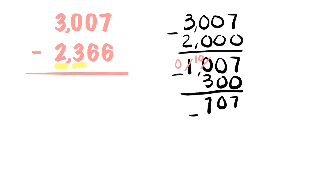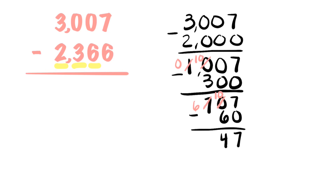So now we're only going to subtract our tens, which is a 6, which makes 60. 7 take away 0 is 7. 0 take away 6 is impossible. We have to go next door and borrow one of the hundreds. So now we only have 600, and we can give those over to the tens. So now we have 10 tens. 10 take away 6 is 4, and 6 take away nothing is 6.